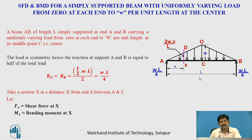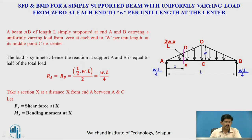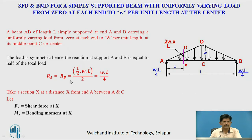As the load is symmetric, the reactions will be equal, that is equal to total load divided by 2. The load is the area of the loading diagram. The loading diagram is triangular, so the load will be one-half base into height, that is one-half L into W. So it is one-half W into L, divided by 2 as we have 2 supports. Therefore Ra equals Rb equals WL by 4.